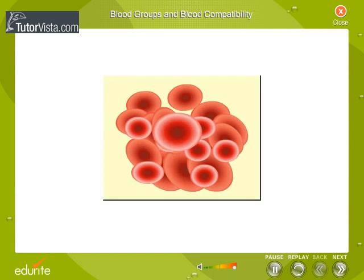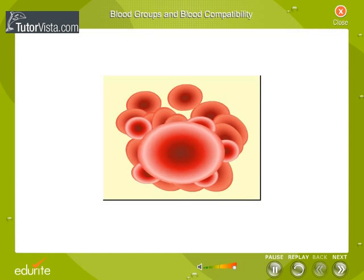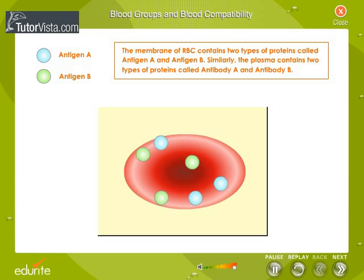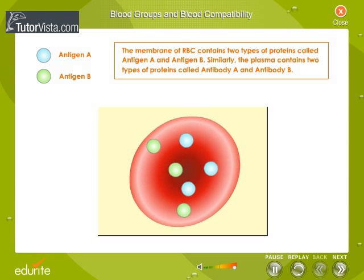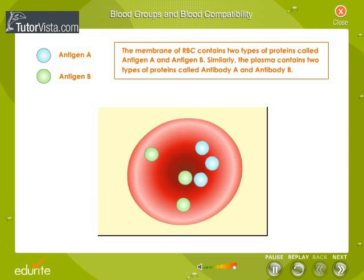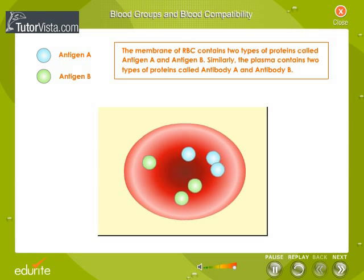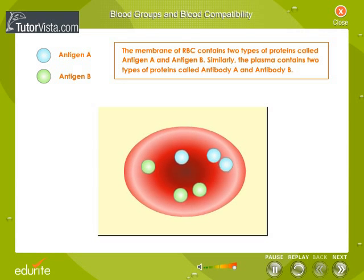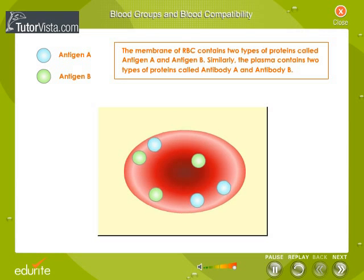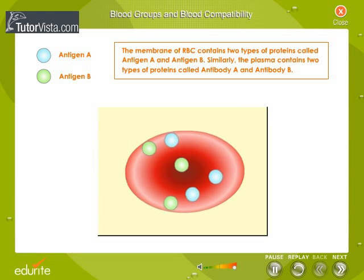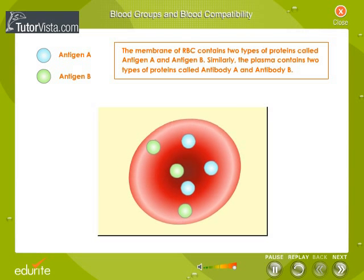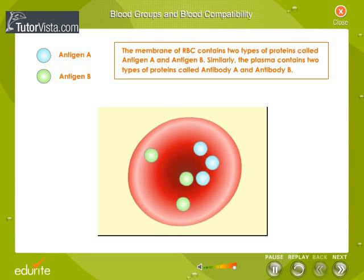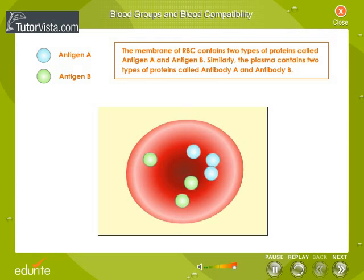Human blood has two major components, namely blood cells and blood plasma. The membrane of the red blood cell has two types of proteins called antigen A and antigen B. The plasma contains two types of proteins called antibody A and antibody B.